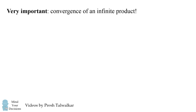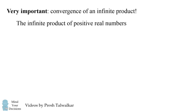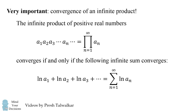Before I get to the answer, it's very important to mention something about convergence of an infinite product. The infinite product of positive real numbers converges if and only if the corresponding infinite sum of term-by-term natural logarithms converges. This gives a connection between the convergence of an infinite product and the convergence of infinite sums. In this video, we'll be dealing with geometric series, so there's no need to formally check convergence — you'll see why they converge through the derivation.